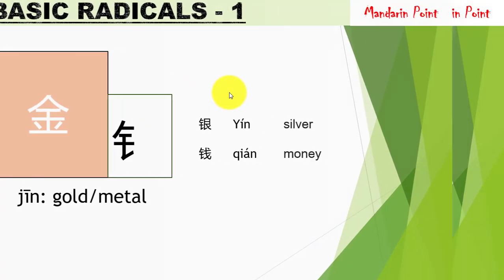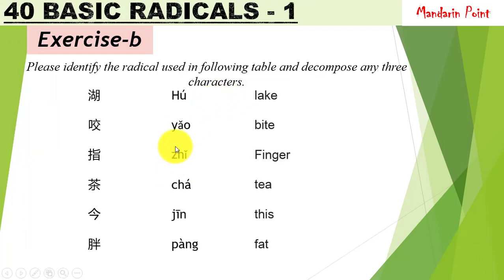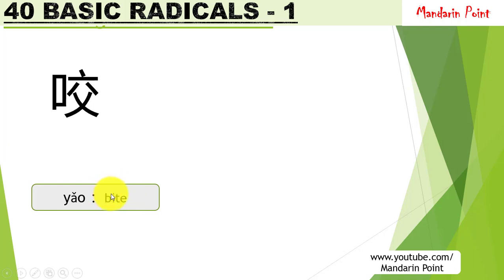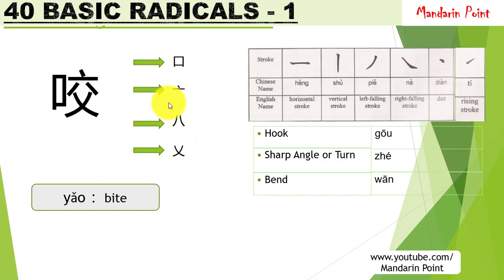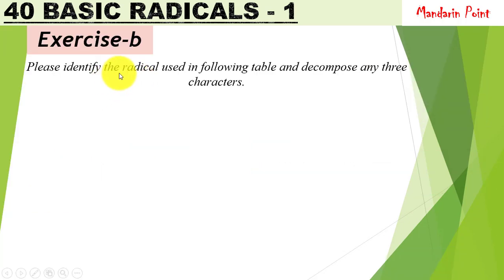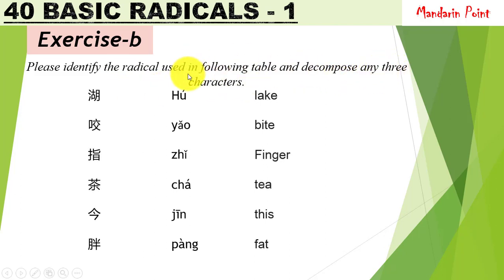Now let's do an exercise. You have to identify these basic radicals in the following characters and decompose any three of them. It is very easy — just identify the radical and decompose the character. For example, 咬 yǎo meaning 'bite' — biting is an action performed through the mouth, so kǒu is used as the radical. We can decompose this whole character using the mouth radical and the remaining strokes. If you don't know how to decompose characters, please watch the previous videos. Now identify the radicals in the following table and decompose any three characters.